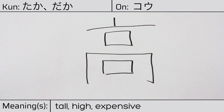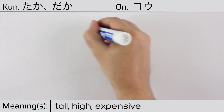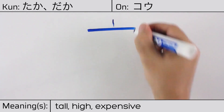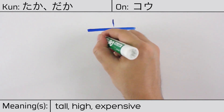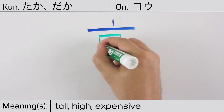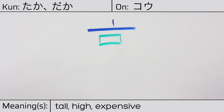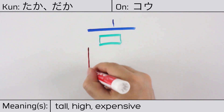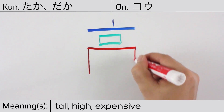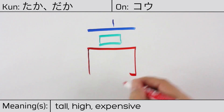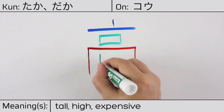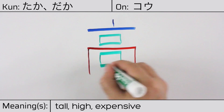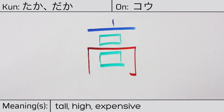This character is made up of the following radicals or parts: the lid or top radical, nabebuta; mouth or kuchi in the center; the enclosure radical; and a final mouth radical. You can remember this kanji by the fact that it looks like a tall building.